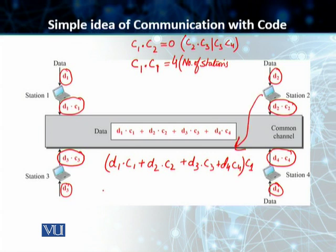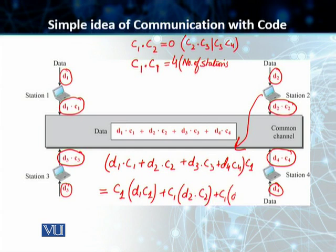Once this is done, we have C1 multiplied by D1·C1 plus C1·D2·C2 plus C1·D3·C3 plus C1·D4·C4. All of these terms except the first are actually going to be equal to zero because when different codes are multiplied, the answer is zero. C1·C2 is zero, C1·C3 is zero, C1·C4 is zero. So we are left with C1·C1 which equals four, times the data D1.